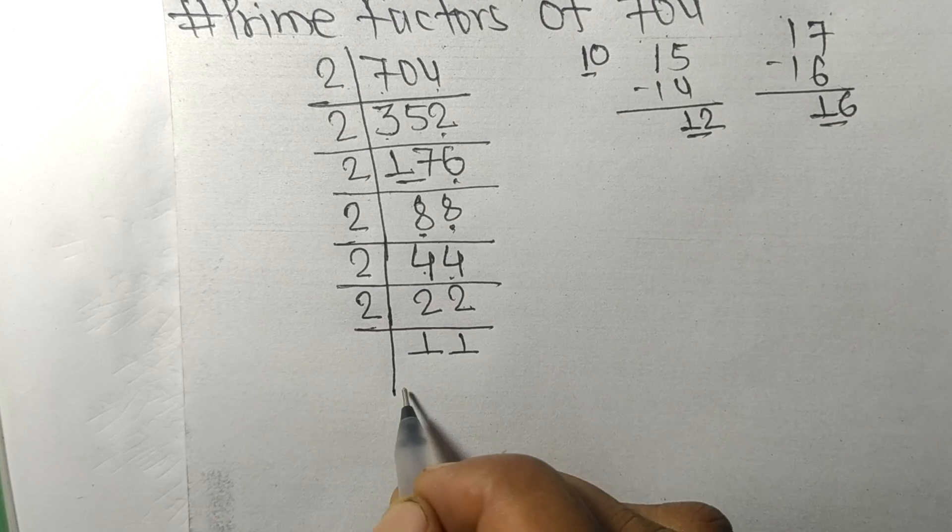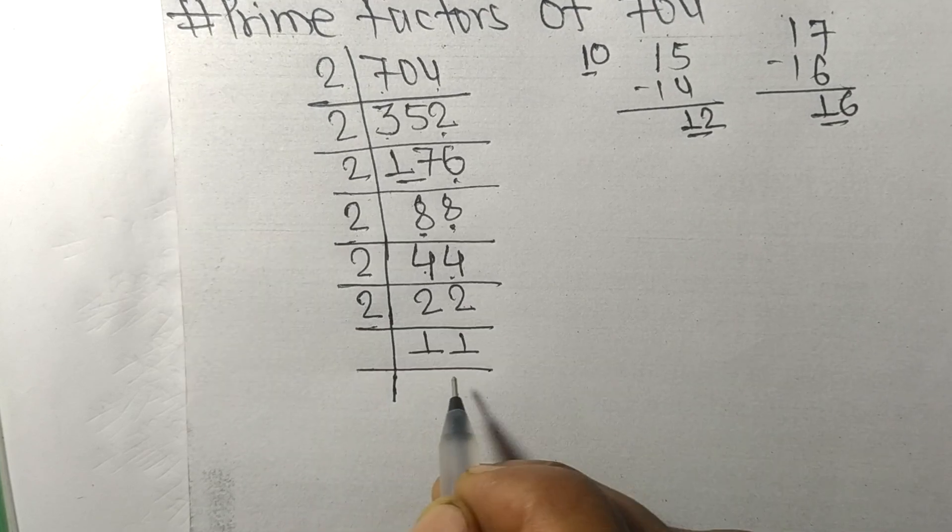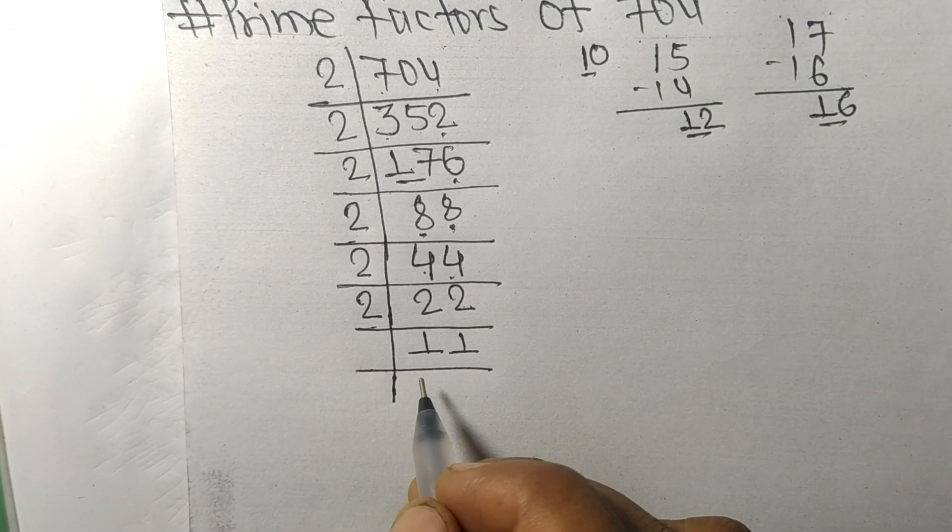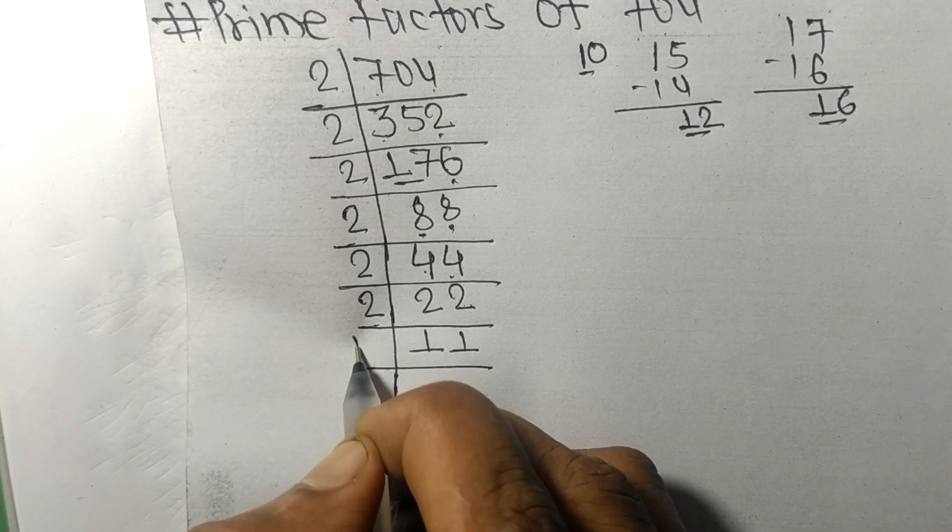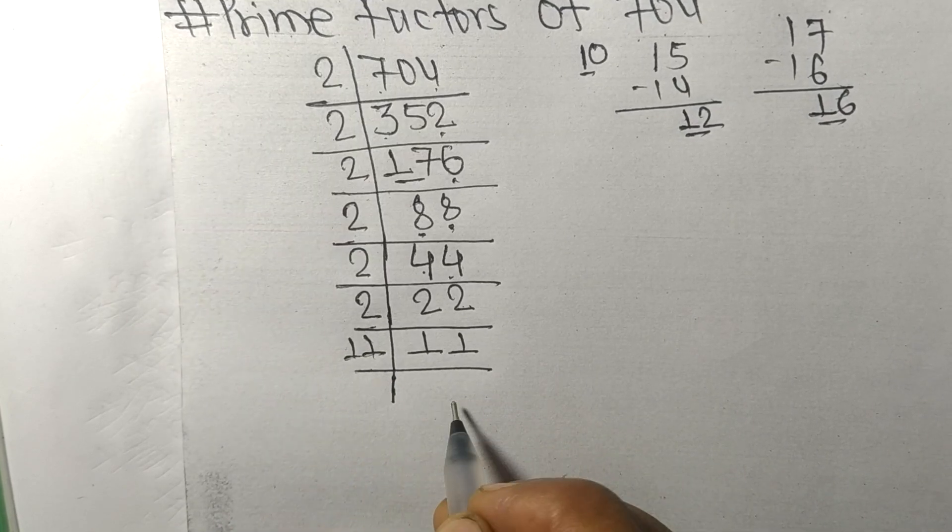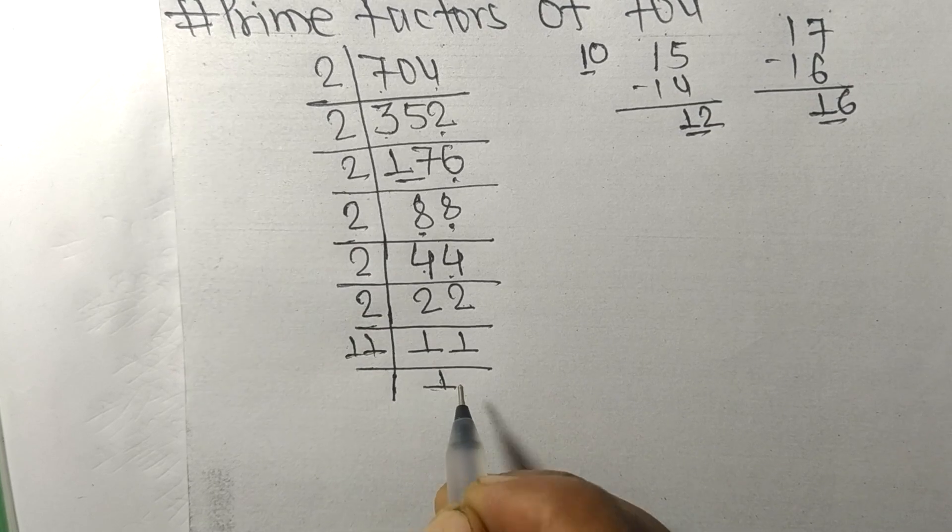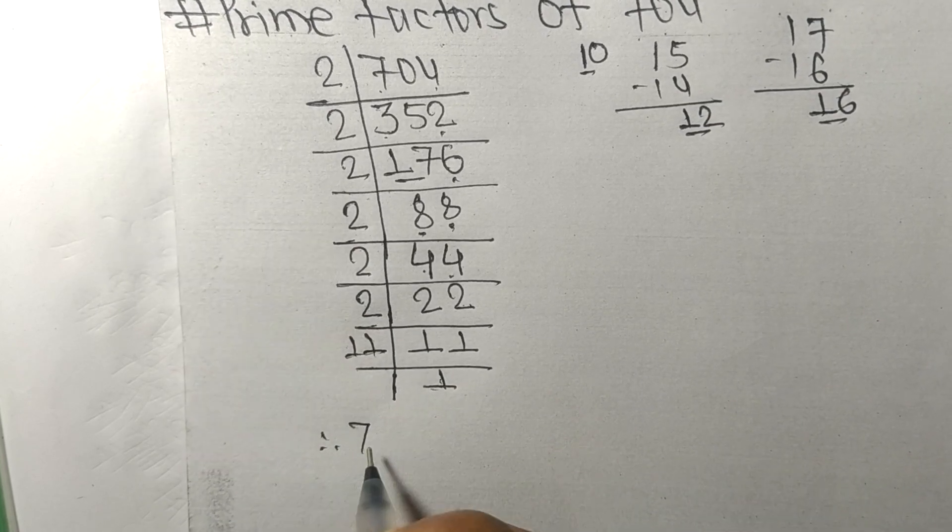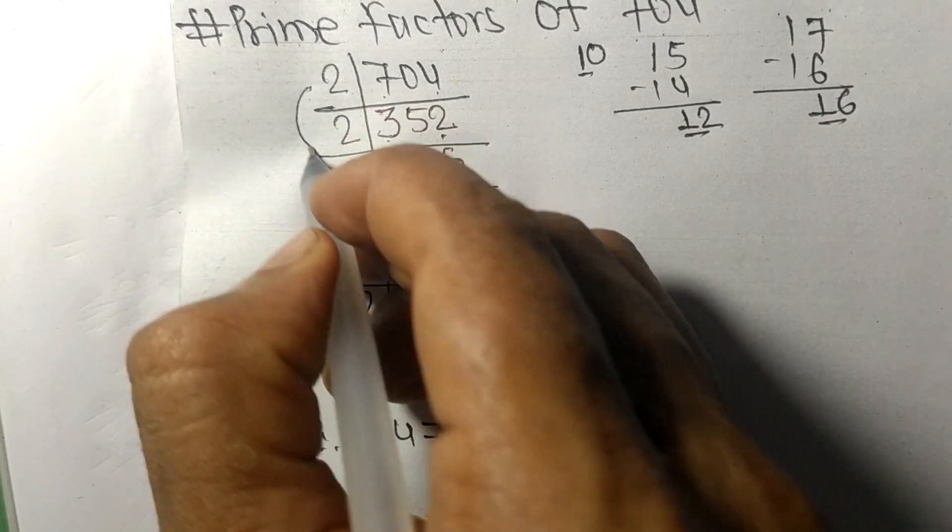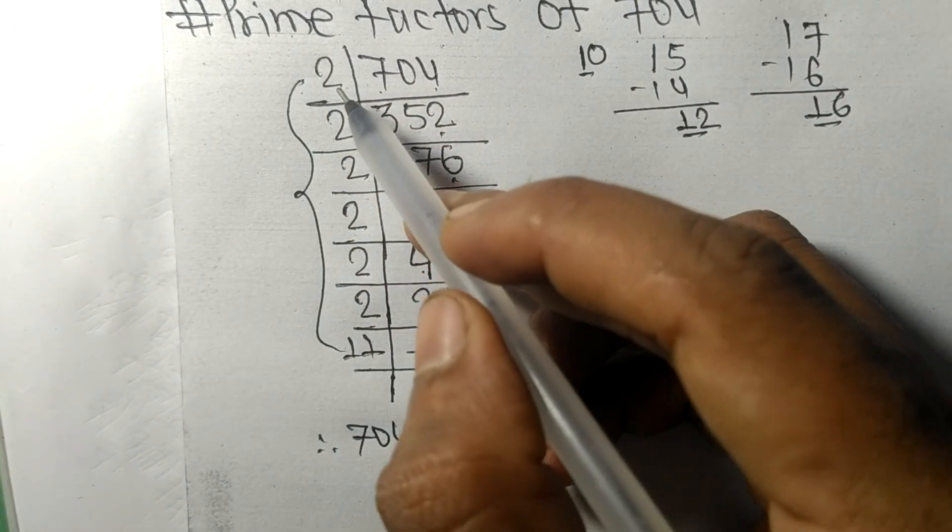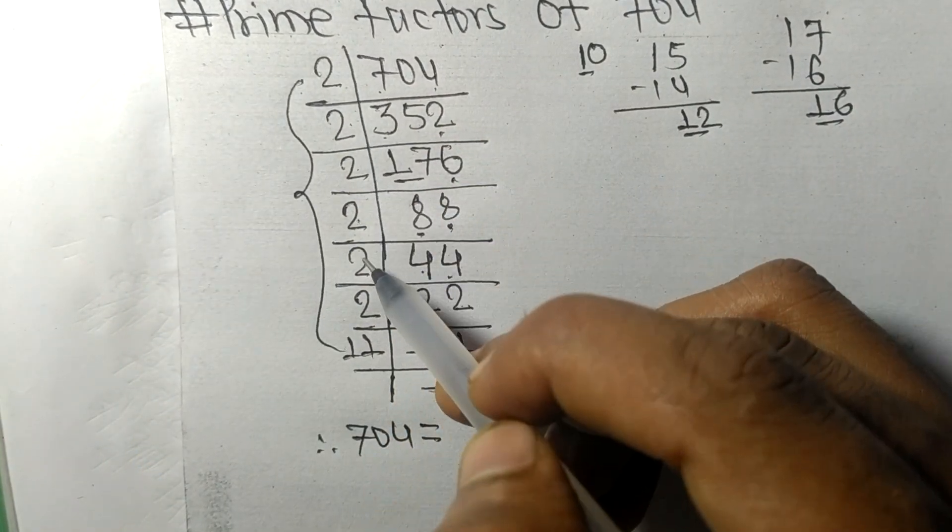Which is divisible by 11 itself, and we get here 1. Therefore 704 is equal to, from this, 1, 2, 3, 4, 5, 6 times 2.